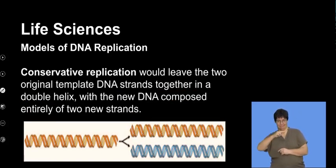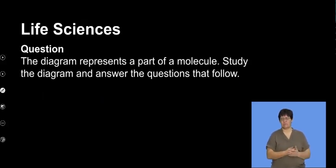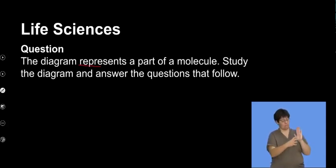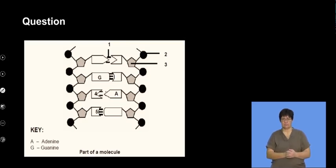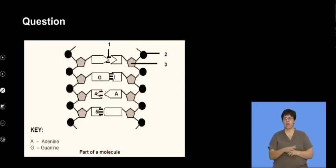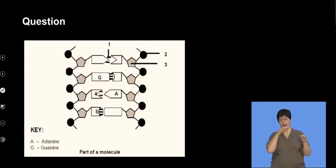We're going to move on to applying our understanding through some questions. The diagram represents part of a molecule — study the diagram and answer the questions that follow. We have a diagram of a DNA molecule. Let's understand firstly why this is DNA: I can see that it's double-stranded, and there are complementary base pairs which we'll need to unpack.